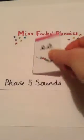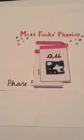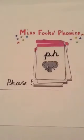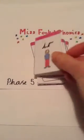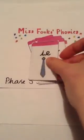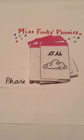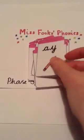Here we go. E, EO, OA, OI, OW, OO, you, OO, you, a. These are the Phase 5 sounds.